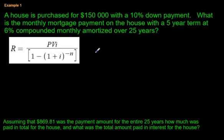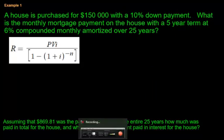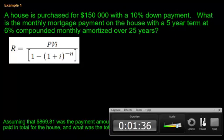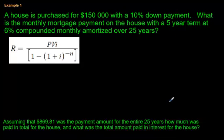Okay, a house is purchased for $150,000 with a 10% down payment. What is the monthly mortgage on the house with a five-year term at 6% compounded monthly amortized over 25 years? One second here while I cough. Okay, so where was I?